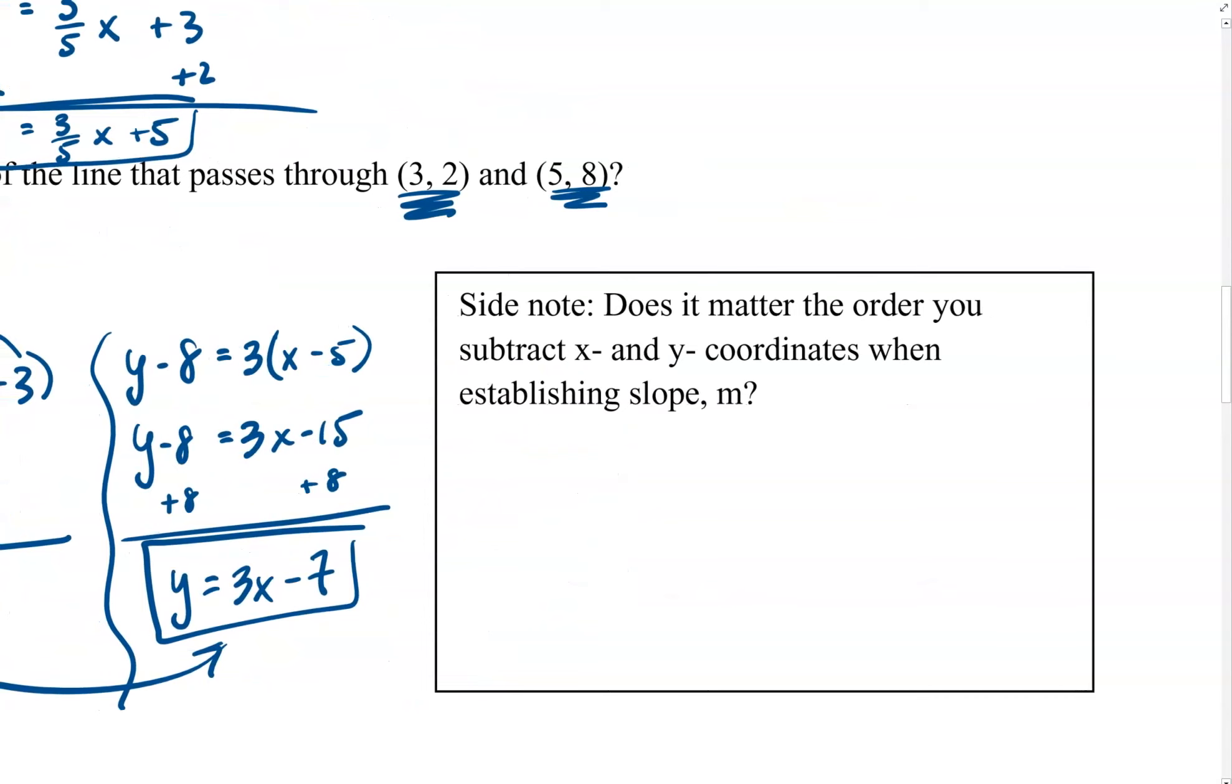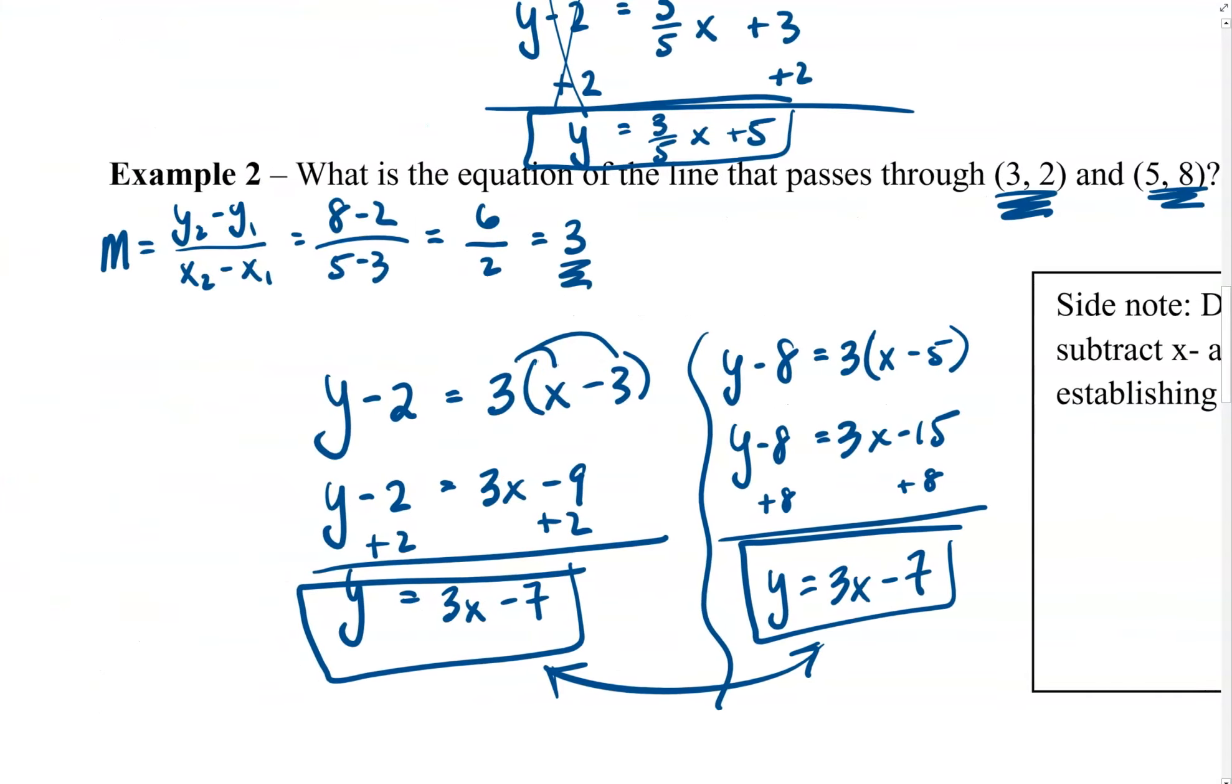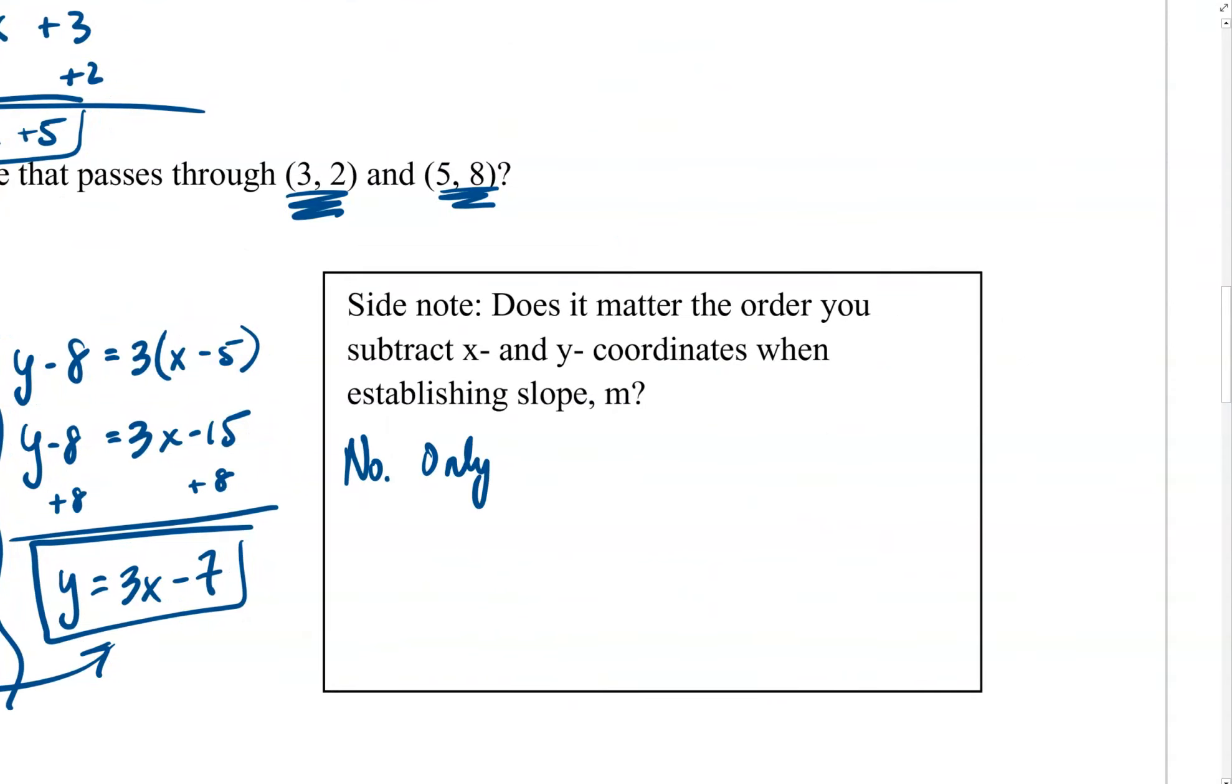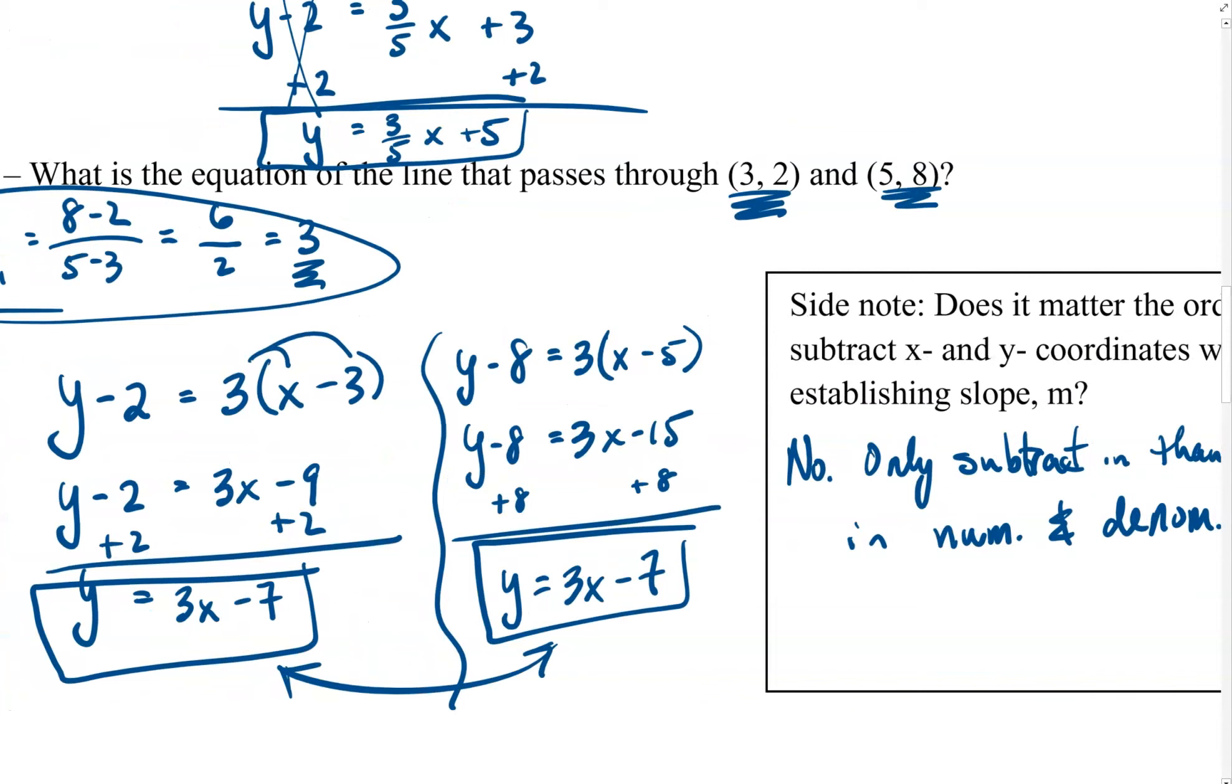As a side note, we want to ask the question too, does it matter in what order you subtract the x and y coordinates when establishing the slope? And remember, the answer to that is no. We talked about this yesterday. The only part that matters is that you subtract in the same order within the numerator and denominator. All that matters is that you subtract in the same direction or order in the numerator and denominator. By that I mean, if you subtracted 8 minus 2 with the y's in the numerator, then you better subtract 5 minus 3 with the x's in the denominator. If you chose to subtract 3 minus 5 for your x values in the denominator, then you better subtract 2 minus 8 for the y values in the numerator. That's what we mean by order mattering.